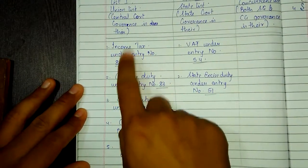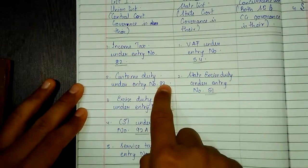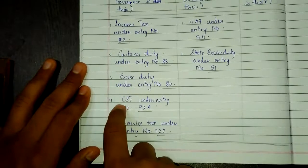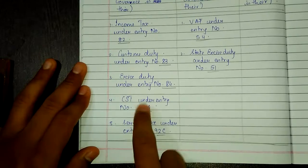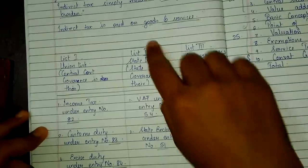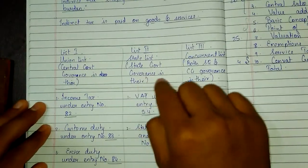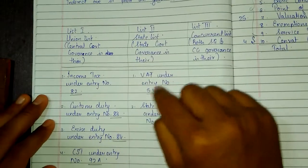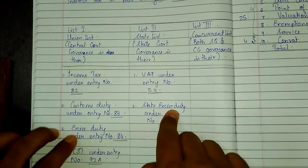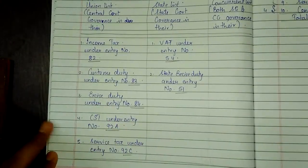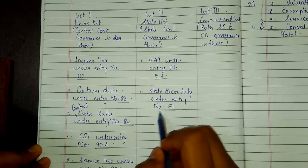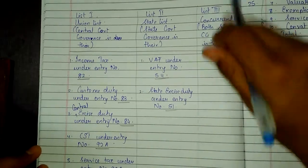Income tax is under entry number 82. Custom duty is under entry number 83. Excise duty is under entry number 84. CST — that is Central Sales Tax — is under entry number 92A. Service tax is under entry number 92C. Under List 2 — the State List — state government governance is there. Under this, VAT — Value Added Tax — is under entry number 54. Central excise duty and state excise duty: state excise duty is under entry number 51. For the Concurrent List, there is nothing for our portion.